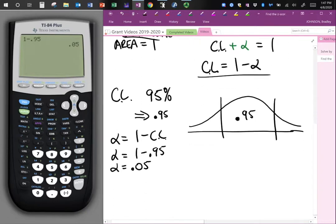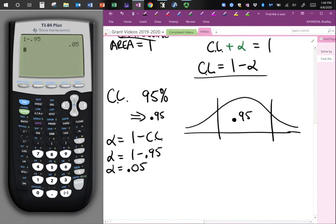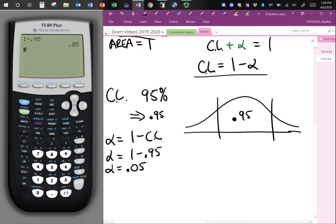But remember, it's split into both of these tails. So in both of these tails, we can't put 0.05 here and 0.05 here. Don't do that. You cannot do that, because if you added up all that, you'd get 1.05. That's greater than 1. We know the area under the whole curve is 1. I need to split it in half, so alpha over 2. So I'll just hit divided by 2 is 0.025, so 0.025 and 0.025.